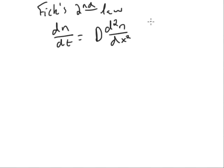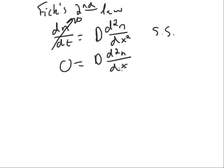In this class we will be looking at steady state situations, so the concentration won't change in time. So this side of the equation will be equal to zero. So we're going to end up with zero equals the diffusion coefficient times the second derivative of the concentration with respect to position.